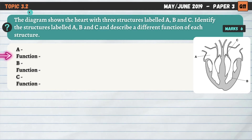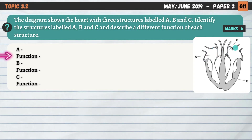Question number two on topic 3.2. The diagram shows the heart with three structures labeled A, B, and C. Identify — a really simple command word, similar to name or state — identify the structures labeled A, B, and C, and describe a different function of each structure. This one's worth six marks. We're going to get three marks first of all for simply naming or identifying these three structures. Starting with A — this is the atrium. The two atria sit at the top of the heart. We need to imagine this is our heart and we are facing outwards from the screen, which means this is in fact the right atrium.